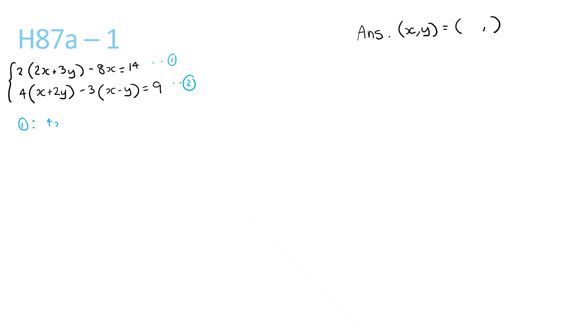So we get 2 times 2x, which is 4x, 2 times 3y, which is plus 6y, minus 8x equals 14. We simplify this, 4x minus 8x is minus 4x, plus 6y equals 14.